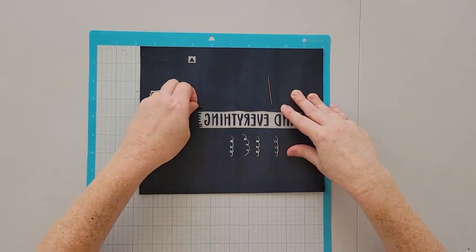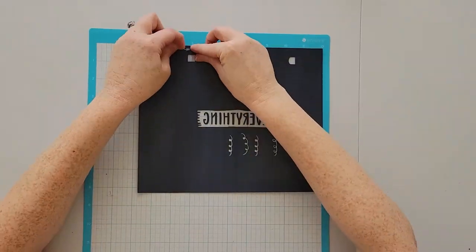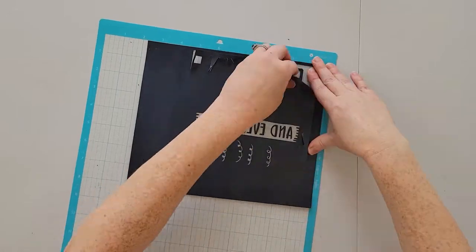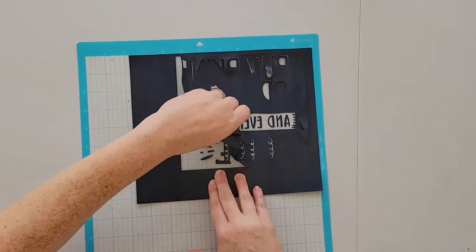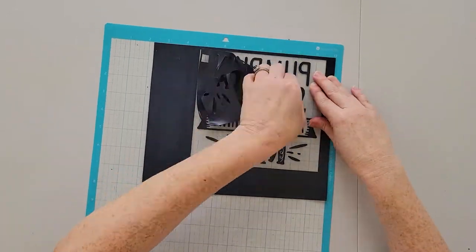Cut and weed a design into HCV. We're using black Caesar brick HCV for the black words in this design and orange Caesar easy weed HCV for the orange pumpkin.